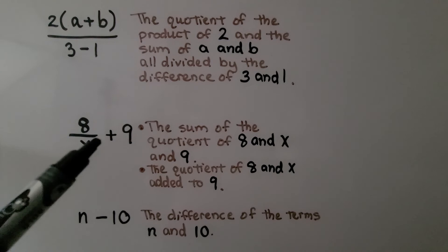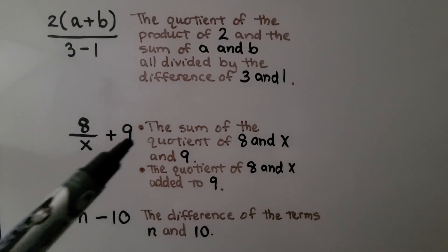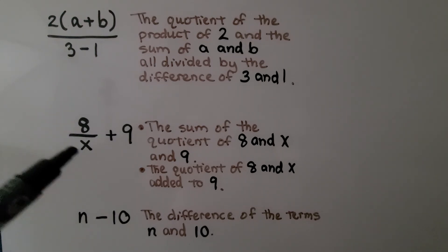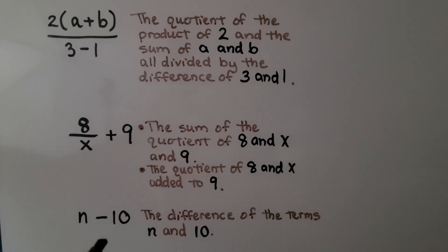Here we see another fraction bar, so we know there's division involved. This is the sum, because we have an addition sign, the sum of the quotient of 8 and x and 9. We can also say the quotient of 8 and x added to 9. And here we have the difference of the terms n and 10.